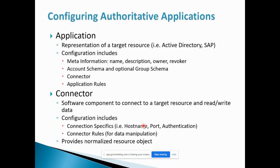Once the SailPoint account is loaded, the aggregation within the application will be executed. The application is the representation of a target resource — Active Directory, JDBC, CSV, and so forth. That application representation must be available in SailPoint to load the data. Configuration includes name, description, account schema, group schema, connector details, and application rules. The connector is a software component to connect to a target resource and read and write data.